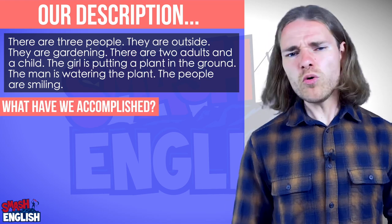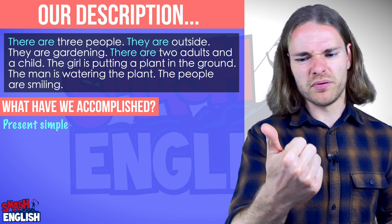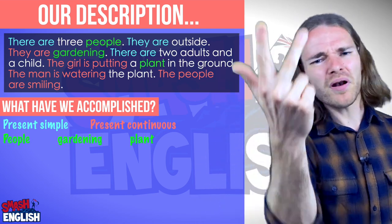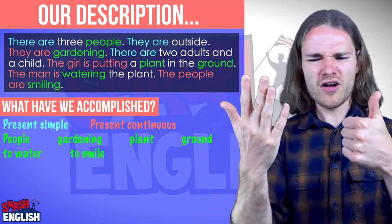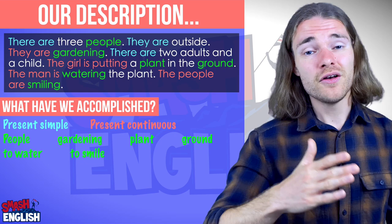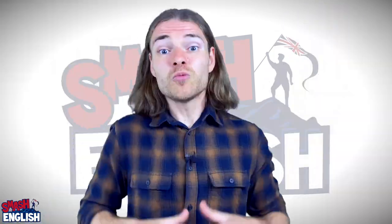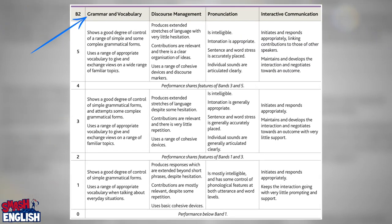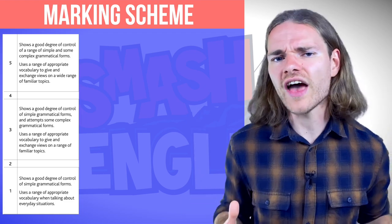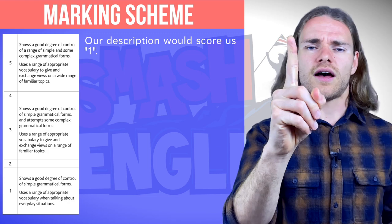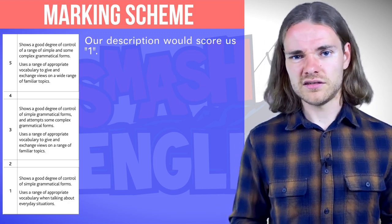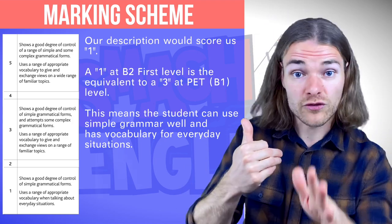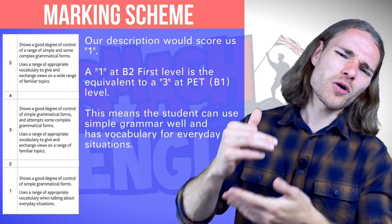So the question is: what have we accomplished with this answer? Well, we've used the present simple and the present continuous. We have also used some fantastic words like 'people,' 'gardening,' 'plants,' 'ground,' 'to water,' 'to smile.' These are really good words if you are taking an A2 exam. Here is the B2 First marking scheme for the speaking exam, and here is the section on grammar and vocabulary. What we have just said would score us an amazing score of one — definitely no higher. This is equivalent to a three, a pass, in a B1 Preliminary exam, because you are using simple grammar and a range of vocabulary to talk about everyday situations.